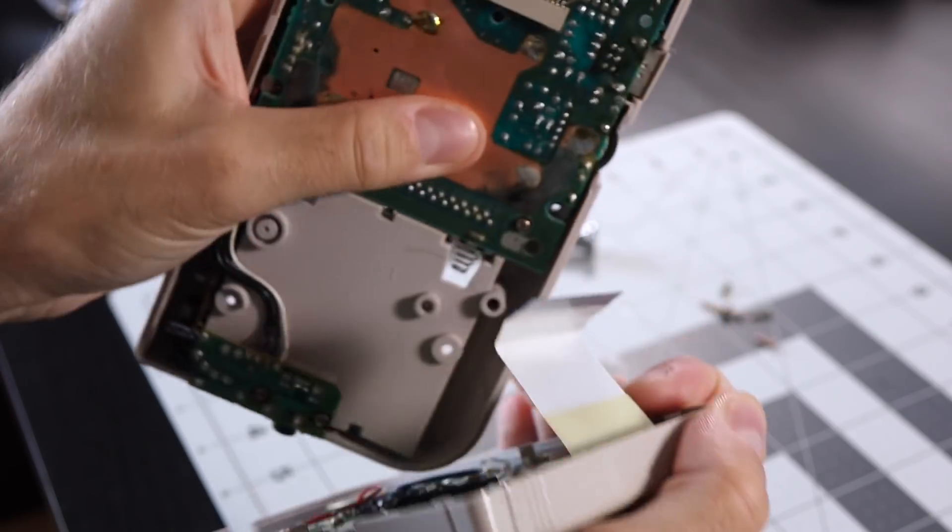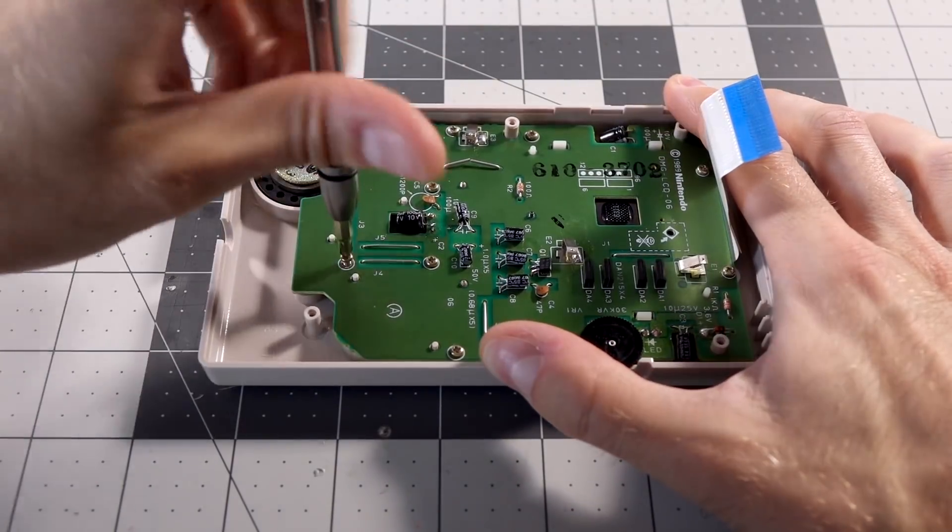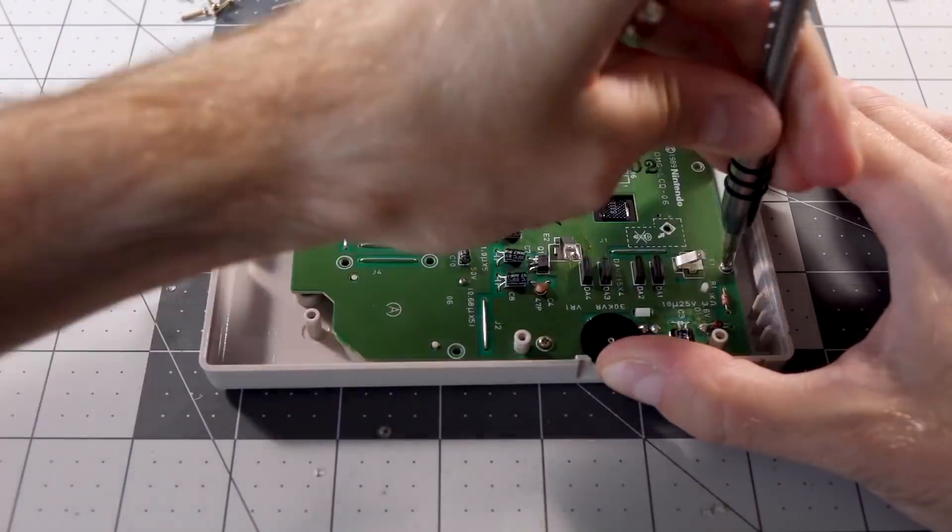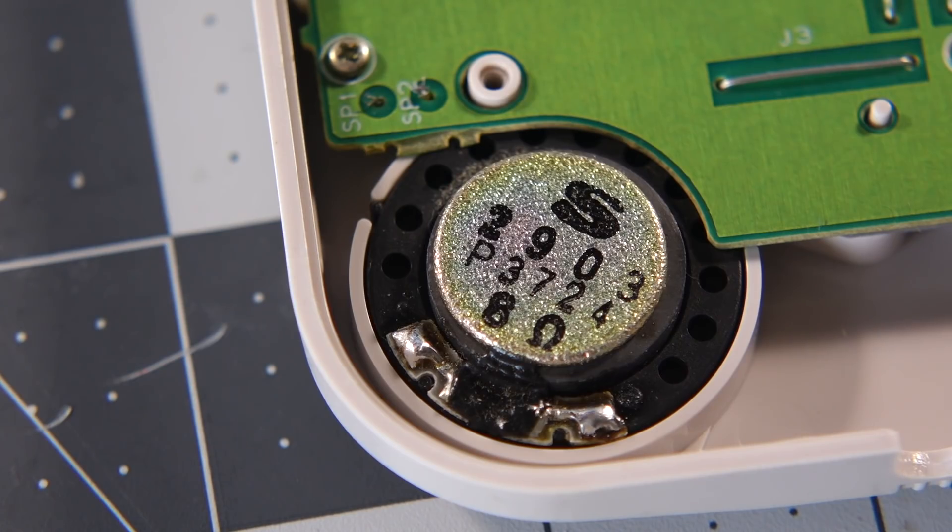If you're not replacing the housing, then the back half can be set aside. The board needs to come out from the front housing, and it's just a bunch of Phillips-head screws. I was wondering why the sound wasn't working on this console. I guess this explains it.